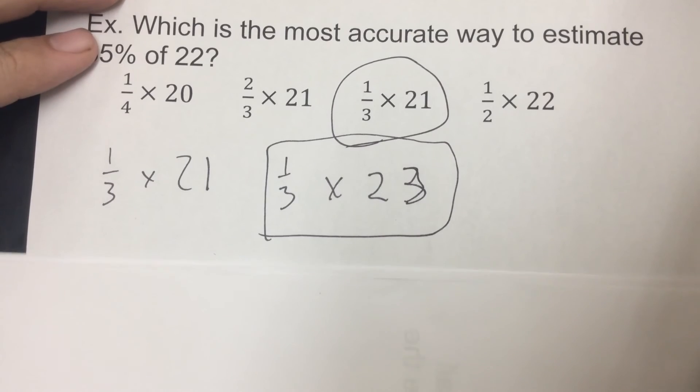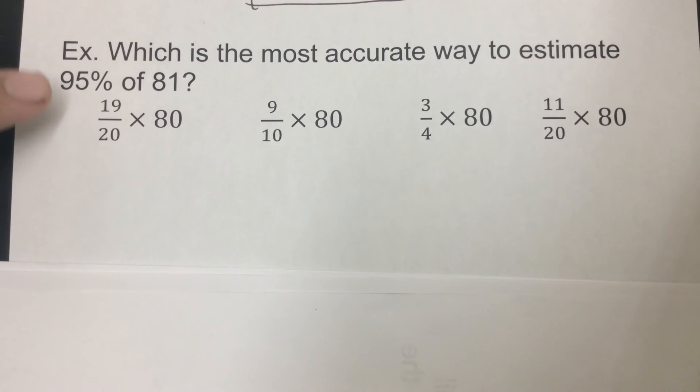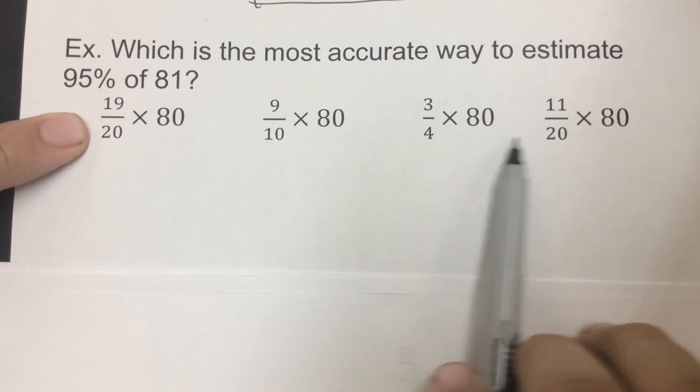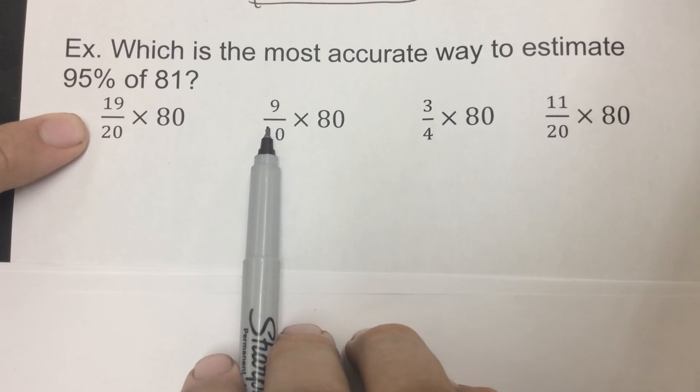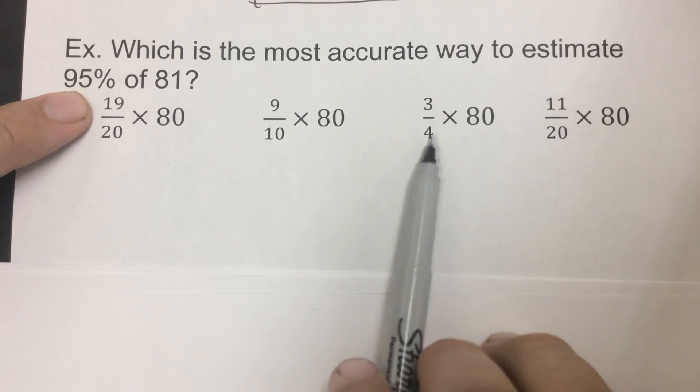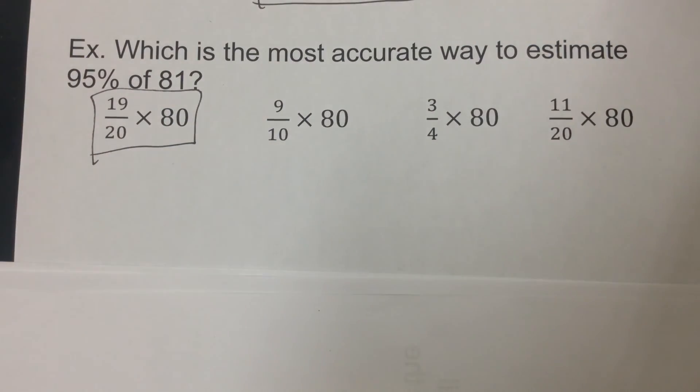Moving on here. So 95% of 81. 95—I know that I can divide that by 5 and I would get 19, and well, 100 divided by 5 is 20, so 19 out of 20 really fits that one. Now here the numbers are all 80, so that part doesn't matter. 11/20 is close to a half. 9/10, well that one's pretty close. 19/20 is closer, and 3/4 is farther away, so 19/20 times 80 would be the one we want to go with.